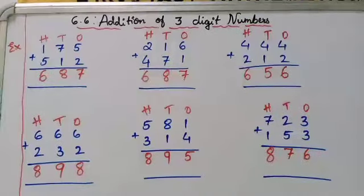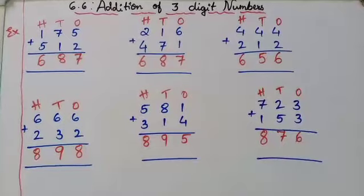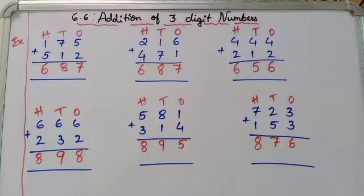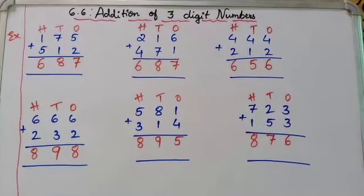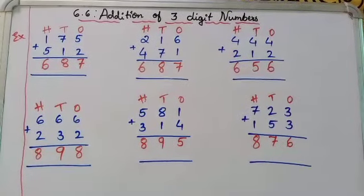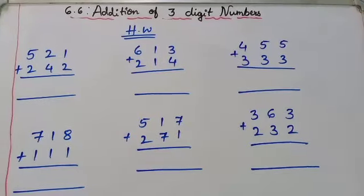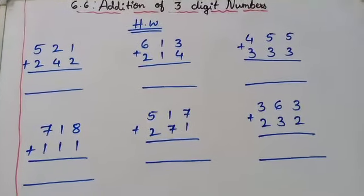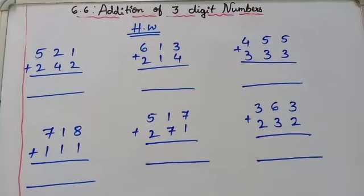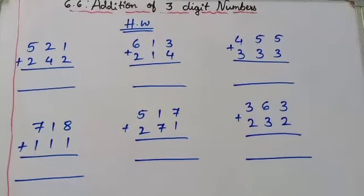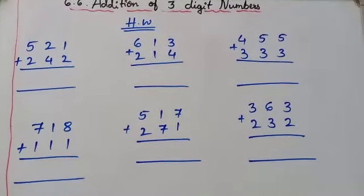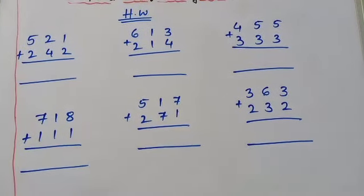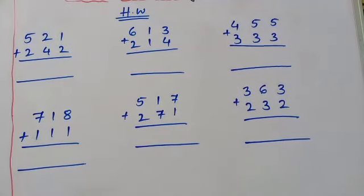Dear children, we have completed the examples of addition of 3-digit numbers. You have to write all these sums in your class workbook neatly one time and follow the steps to solve the sums. Now I am going to give you a few homework problems. The first is 521 plus 242, the second is 613 plus 214, the third is 555 plus 333, the fourth is 718 plus 111, and the fifth is 517 plus 271.